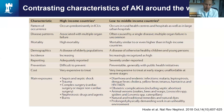AKI in high income countries often occurs in the setting of acute illness or following surgery, often in older patients, many of whom have long-term conditions that increase their risk of AKI. Conversely, in lower income countries, AKI is often seen in younger age groups and is often related to communicable diseases. Infectious causes, poisoning, and obstetric complications are a much greater cause of AKI in that setting.